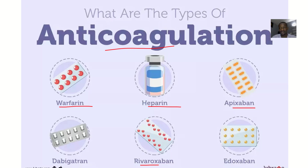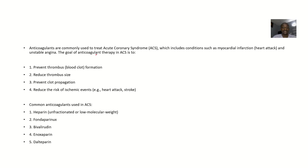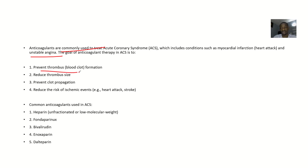Dabigatran — those are the examples. So let's have the overview: anticoagulants are commonly used to treat acute coronary syndrome, which includes conditions such as myocardial infarction (heart attack) or unstable angina. The goal of anticoagulant therapy is to prevent blood clots, also known as thrombus formation.